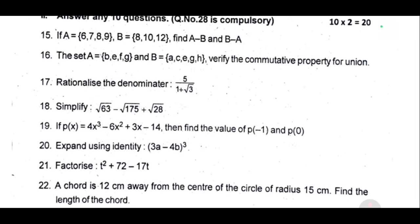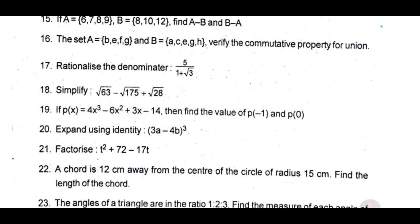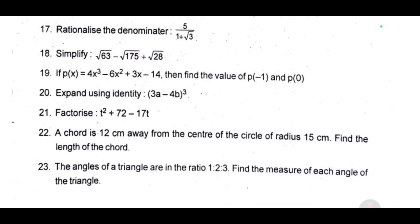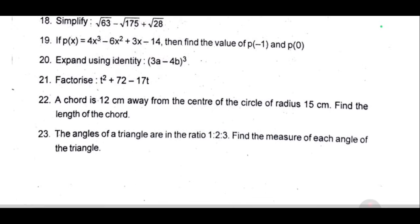21, factorize t square plus 72 minus 17t. 22, a chord is 12 cm away from the center of the circle of radius 15 cm, find the length of the chord. 23, the angles of a triangle are in the ratio 1 is to 2 is to 3, find the measure of each angle of the triangle.